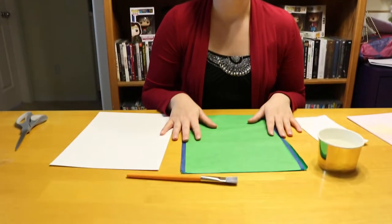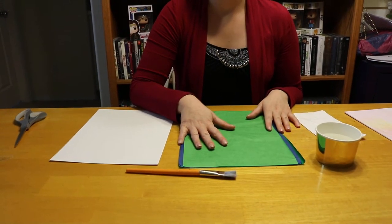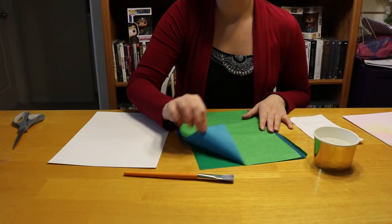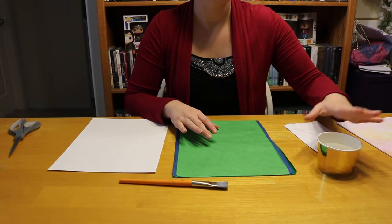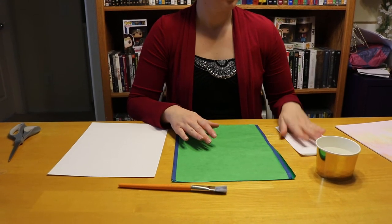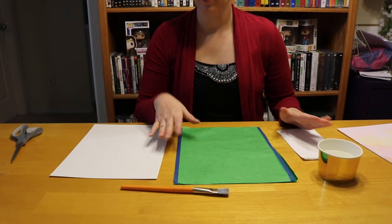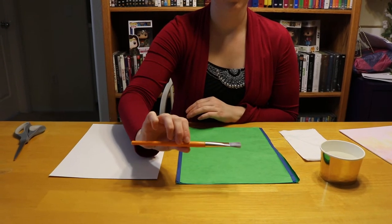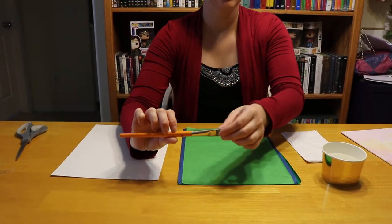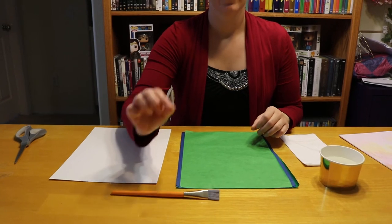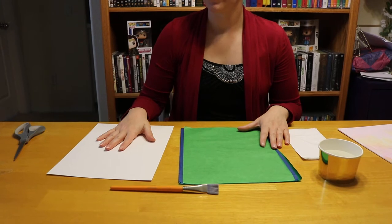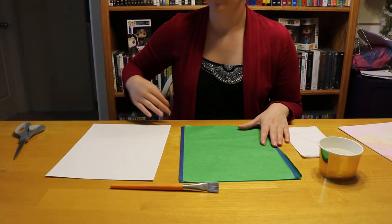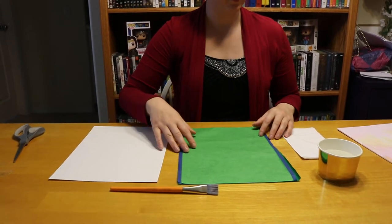So what you need for this project is just tissue paper in some colors you like. I'm going to be using blues and greens today. You're going to need some water, just a cup of water here. A napkin if you want, just to put your paintbrush down on. A big thick paintbrush is fine. You're just going to be using it to disperse your water. And a piece of paper, any kind of blank white paper or canvas.